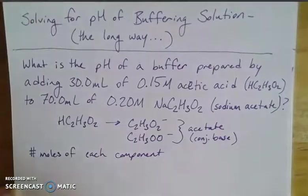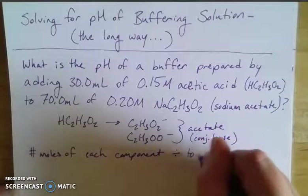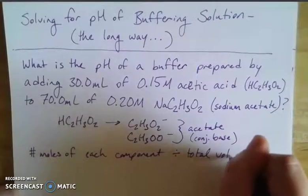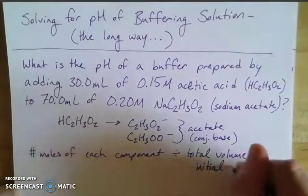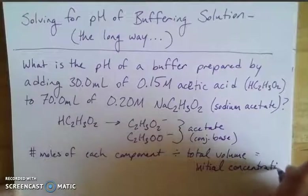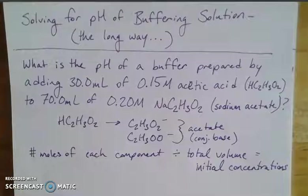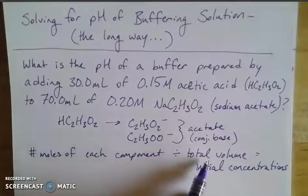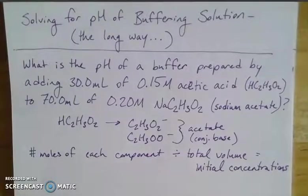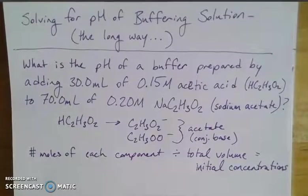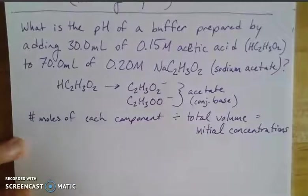I need the number of moles of each component, and then I'll divide those by the total volume. So we'll divide by the total volume, and that'll give me my initial concentrations. The initial concentrations are what we want because we want to put together an ICE box. So we need the number of moles of each component, we need the total volume, which is going to be 100 mL, right? 30 mL of my acetic acid, 70 mL of my sodium acetate. And so we can figure out our number of moles of each component using the same way that we have been.